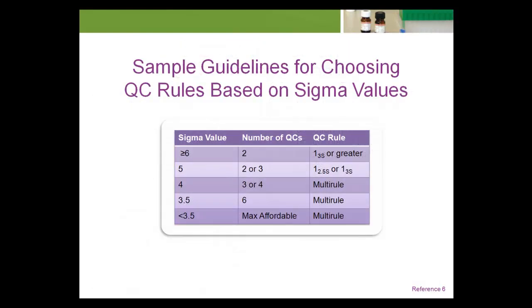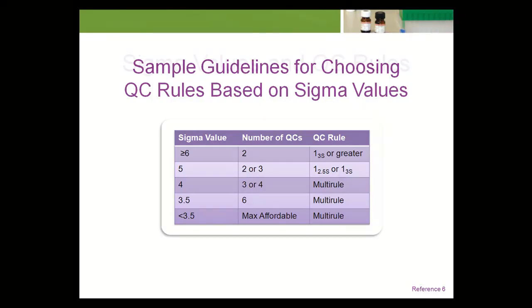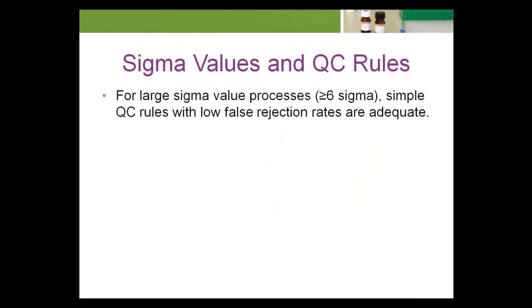Simple guidelines for choosing appropriate QC rules based on sigma values have been proposed, and an example of one such guideline is shown here. For lower sigma values, more QC samples and more powerful QC rules are recommended. Note: a 1-3-S QC rule rejects if any of the QC results differ from their target concentration by more than 3 SDs. Multi-rules are combinations of individual QC rules that tend to be more powerful than simple rules such as the 1-3-S QC rule. For large sigma value processes (greater than or equal to 6 sigma), simple QC rules with low false rejection rates are adequate.